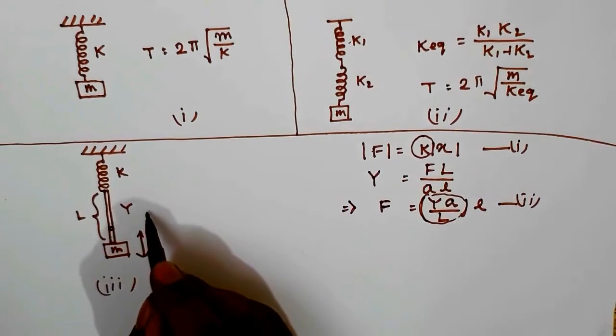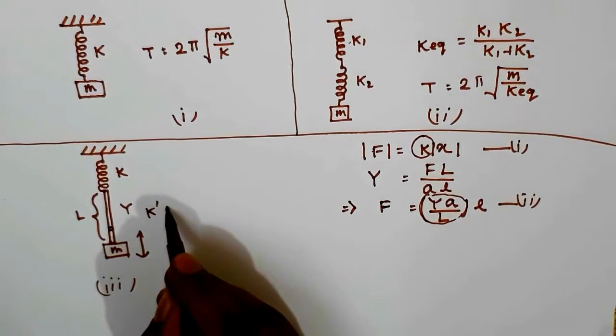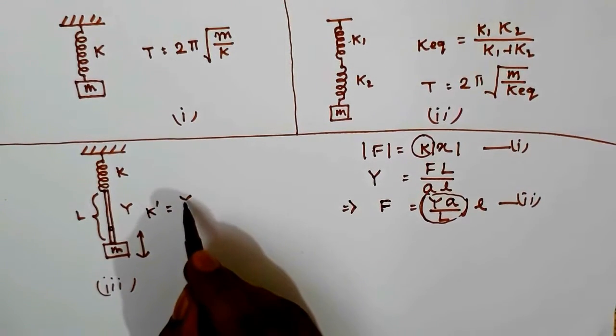So we can write in that case k' equal to Y*A/L. So here the equivalent spring constant K_eq becomes k*k'/(k+k'), or it is equal to k*Y*A/L divided by k + Y*A/L.